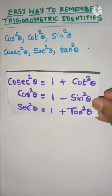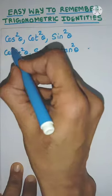Friends, here is an easy way to remember these identities. So let's start with cos square theta.